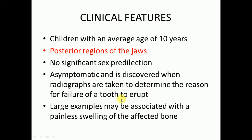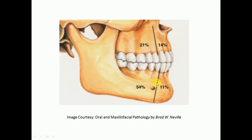They are mostly asymptomatic and are discovered on routine radiographic examination or when radiographs are taken to determine the reason for failure of a tooth to erupt, meaning it is also associated with unerupted teeth. Large examples may be associated with a painless swelling. If they are large, they will cause facial asymmetry.